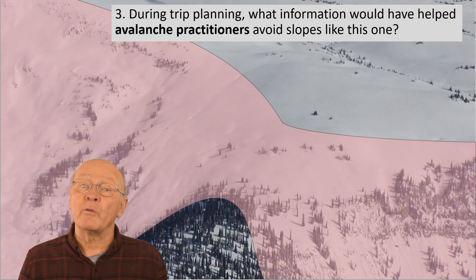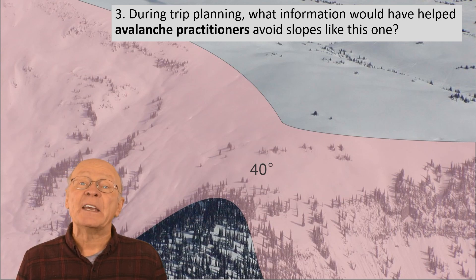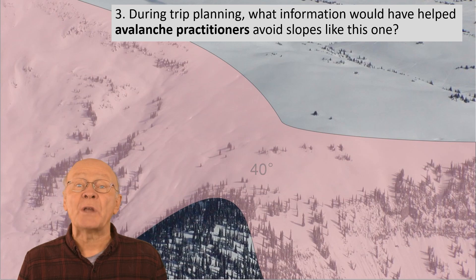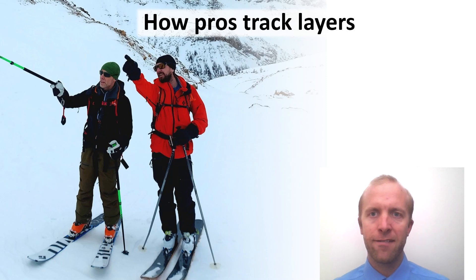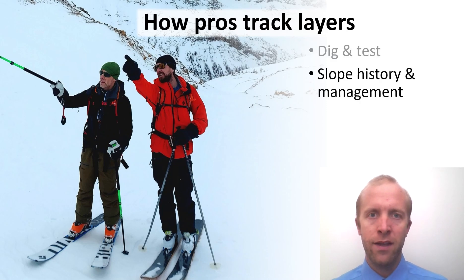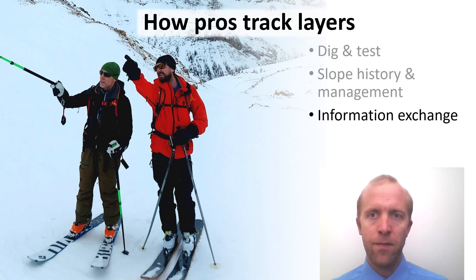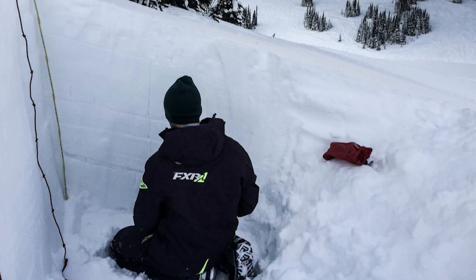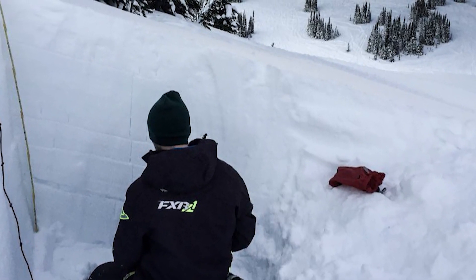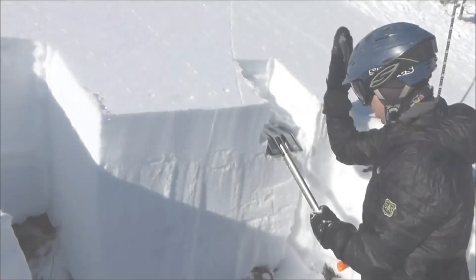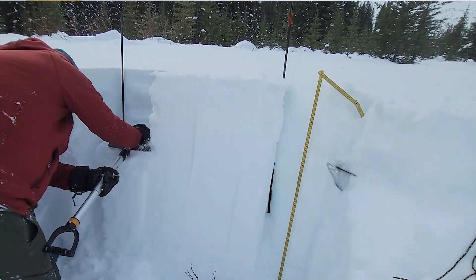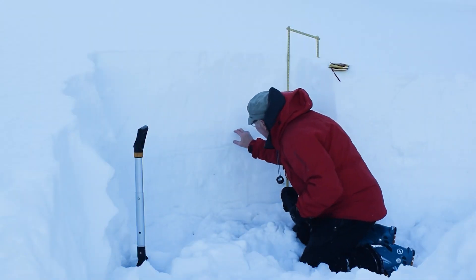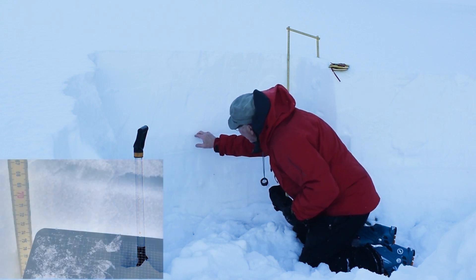Based on the knowledge of regional avalanches on the surface hoar layer, and perhaps on the age and depth of the surface hoar layer, the experienced practitioners may have ruled out these steep open slopes. Some of the ways professionals track surface hoar layers are digging, slope management, information exchange, and snowpack evolution models. Digging pits and performing snowpack tests provide good information about the bonding and reactivity of a layer. However, point observations can miss surface hoar, so this information is most useful for tracking a layer over time rather than making real-time terrain decisions.